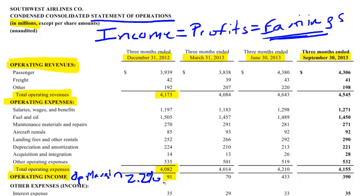And that tells us something more than just $91 million. Now we know that of the revenue that Southwest brought in during this time period, 2.2% of that revenue went to operating income. And that 2.2% is a much more relevant figure than the $91 million. As we compare that across different time periods and across different airlines, that will be a much better figure to use for comparisons.